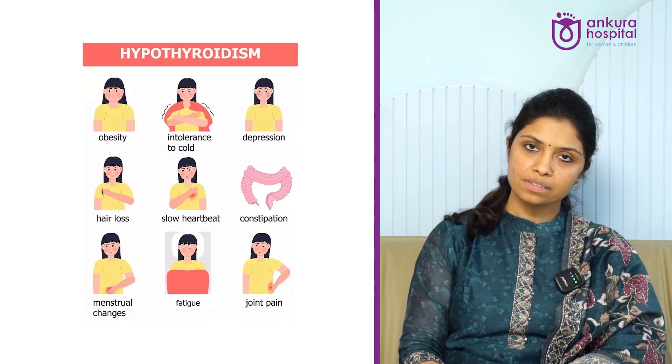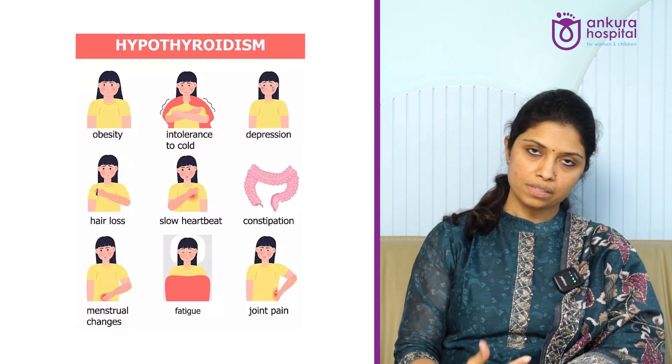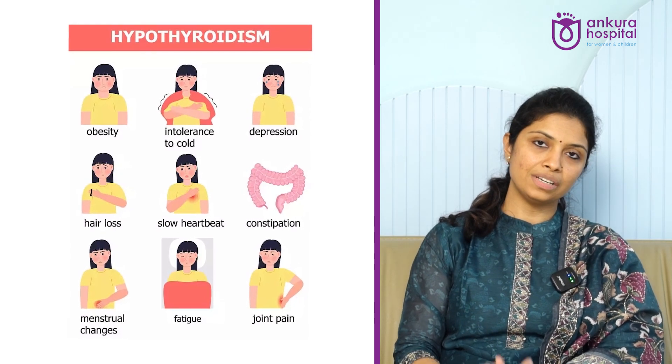Now let's talk about autoimmune hypothyroidism, which is usually seen in children around the age of seven or eight years, though it can happen a little earlier. The common symptoms include excessive weight gain, constipation, passing hard stools, hair loss, feeling tired all the time, mood changes, and changes in academic performance. If you notice any of these symptoms, you must approach your pediatrician or pediatric endocrinologist immediately to check thyroid hormones and start treatment to ensure proper growth and development of your child.